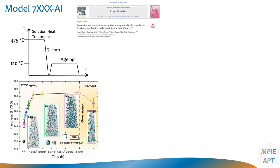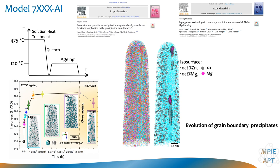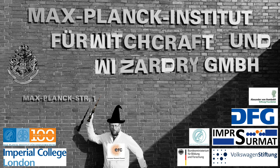We took a model 7000 series aluminium alloy through a whole series of heat treatments and looked at the precipitation sequence — summarized in Juan Zhao's first paper on this — and also studied the evolution of grain boundary composition and grain boundary precipitate composition, published last year or two years ago. I invite you to look at what atom probe can do for aluminium alloys in this context. Thank you very much for your attention, and I want to thank all co-workers at MPIE and the funding agencies who have supported us.